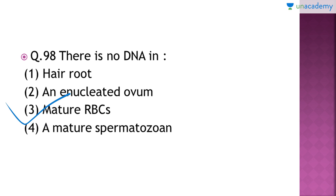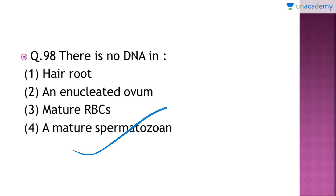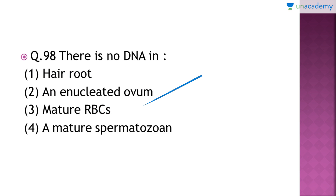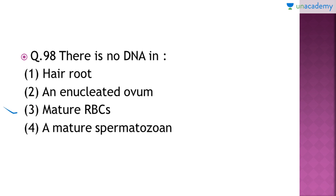In hair root cells, the nucleus is present and hence DNA is also there. For enucleated ovum — that means an ovum from which the nucleus is artificially removed — enucleation is done artificially, so it can't be considered the answer. Mature RBCs lack DNA naturally on their own, so the answer is option 3. Please do not confuse option 2 with option 3.